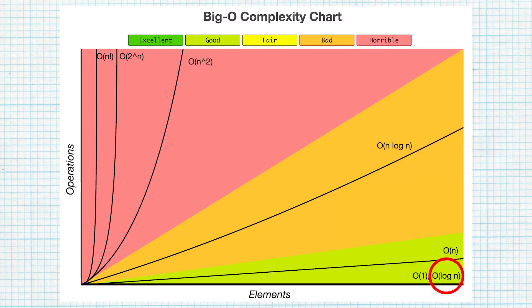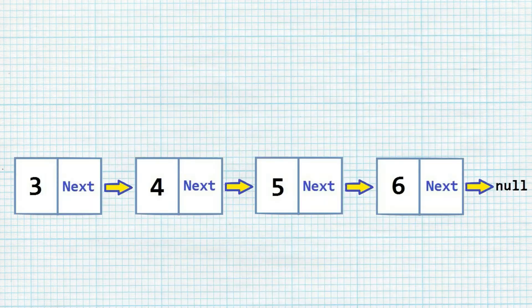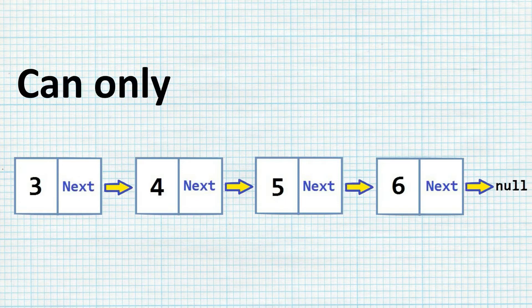These characteristics mean that binary search trees score pretty favourably on the time complexity chart. This is especially true in comparison to other relational data structures, such as linked lists, which have a score of linear time. If we wanted to search through a linked list, we would have to pass through each node sequentially — there is no choice of direction, we are always going in the same direction.